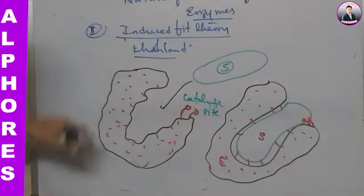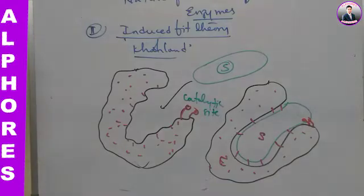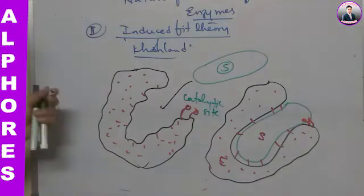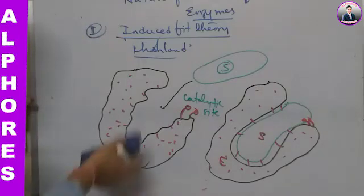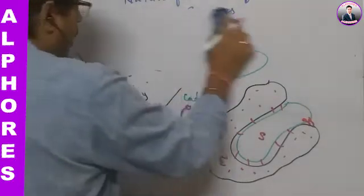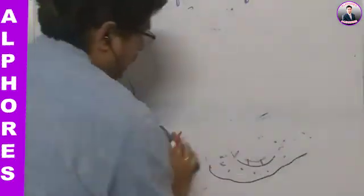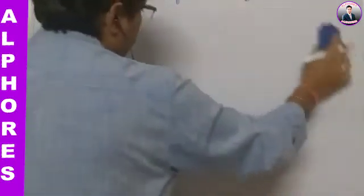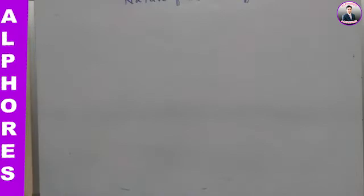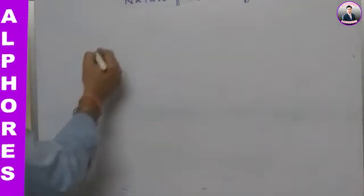So this is proposed by Koshland. In this way enzyme actions take place. This is the nature of the action of enzymes — the lock and key model and the induced fit theory. Next we will go to the factors affecting the functioning of the enzymes. There are different factors.